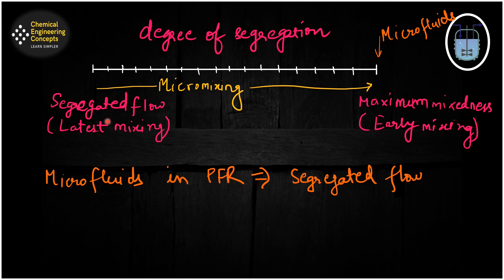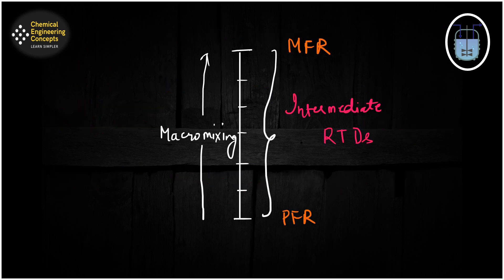For micro fluids in a PFR, we are on the segregated flow side. When it comes to macro mixing, the two extents are towards the mixed flow reactor and the PFR. The lower end resonates with the left-hand side of the previous discussion, and at intermediate values we have RTDs — residence time distributions — that have to be taken into consideration.